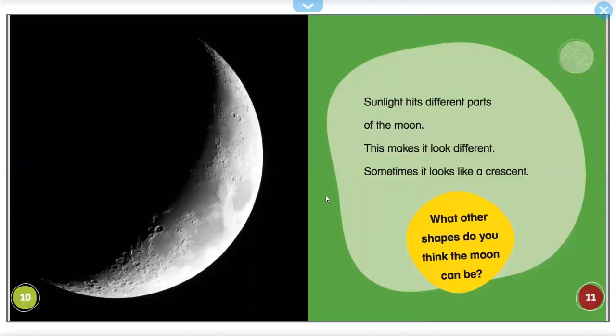Sunlight hits different parts of the moon. This makes it look different.